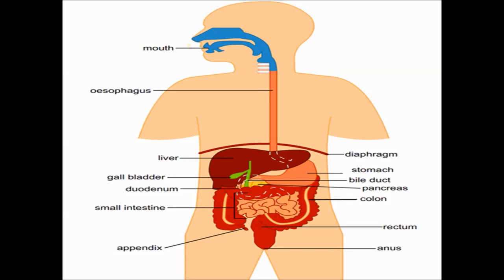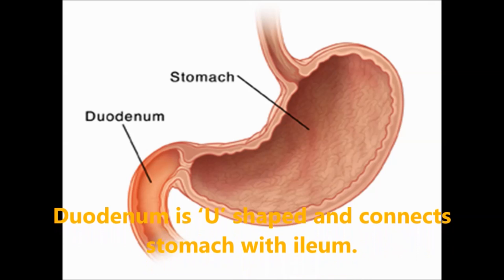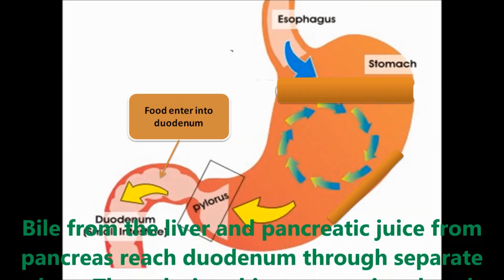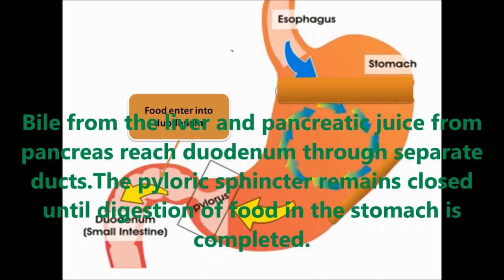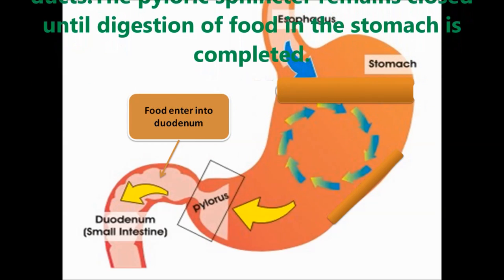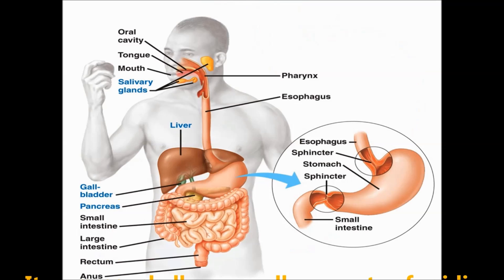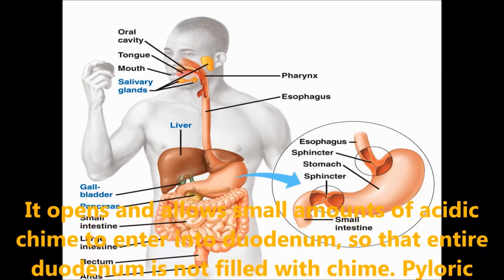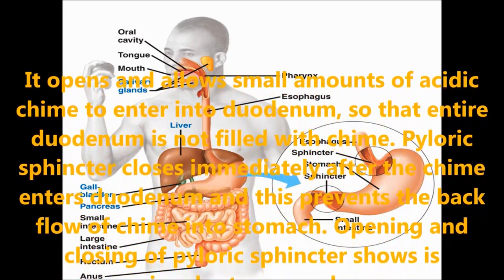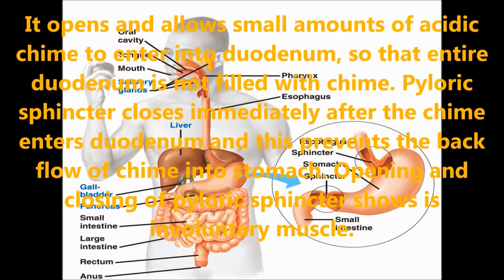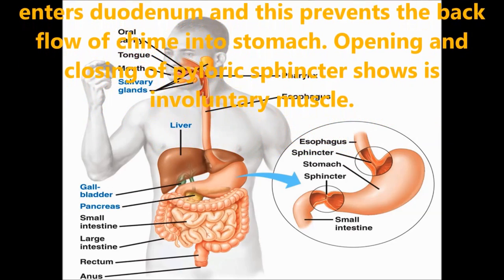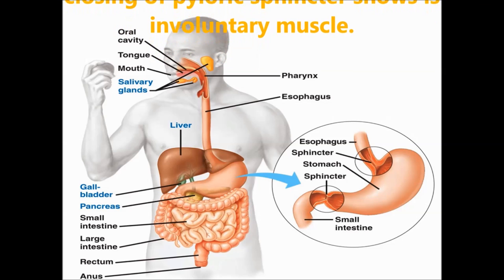Duodenum is U-shaped and connects the stomach with the ileum. Bile from the liver and pancreatic juice from the pancreas reach the duodenum through separate ducts. The pyloric sphincter remains closed until digestion in the stomach is completed, then opens to allow small amounts of acidic chyme into the duodenum so that the entire duodenum is not filled at once. The sphincter closes immediately after chyme enters, preventing back flow into the stomach. The opening and closing of the pyloric sphincter is an involuntary action.